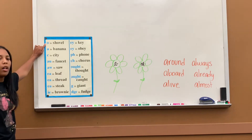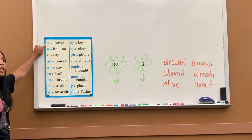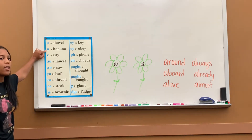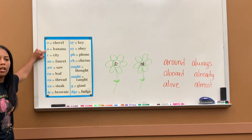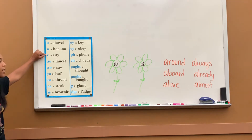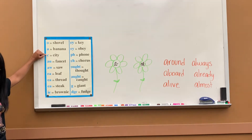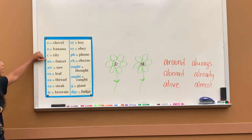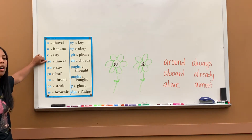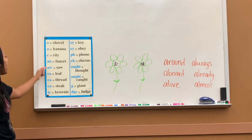O says uh in shovel. A says uh in banana. C says ssss in city. U says uh in faucet.